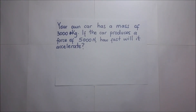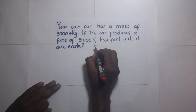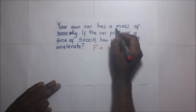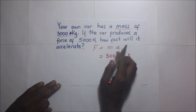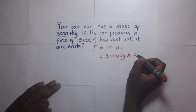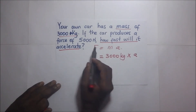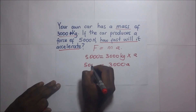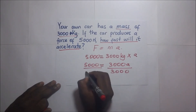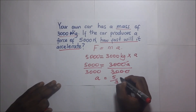Final example: Your car has a mass of 3,000 kilograms. If the car produces a force of 5,000 Newtons, how fast will it accelerate? Using F = ma: 5,000 = 3,000 × a. Dividing both sides by 3,000, our acceleration is 5/3 meters per second squared.